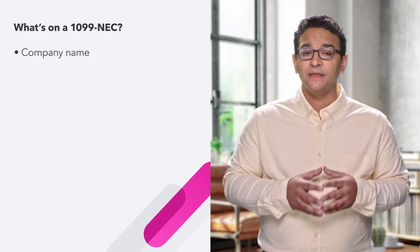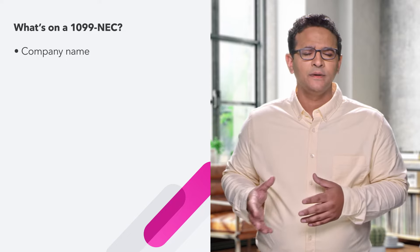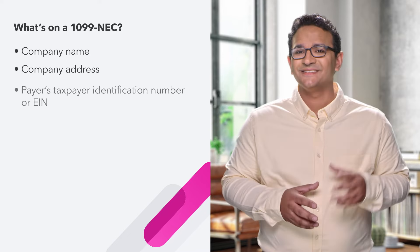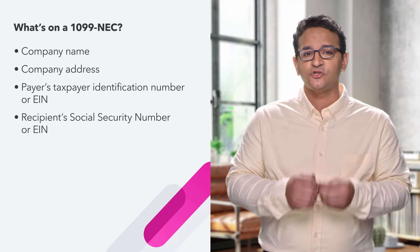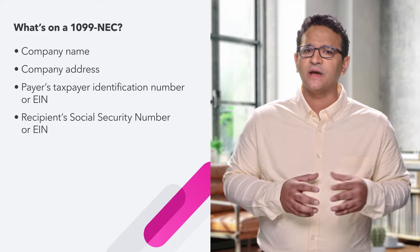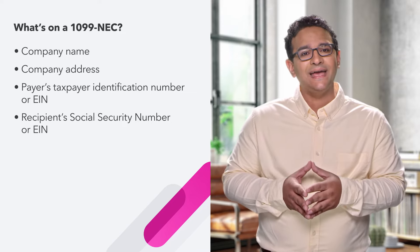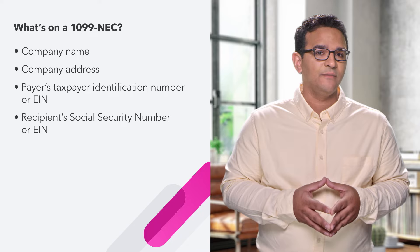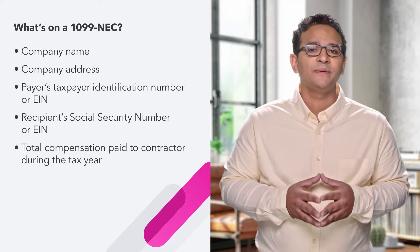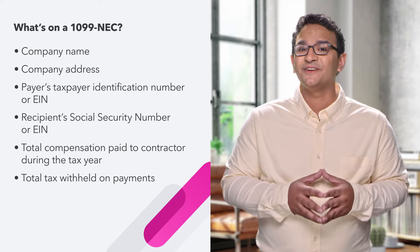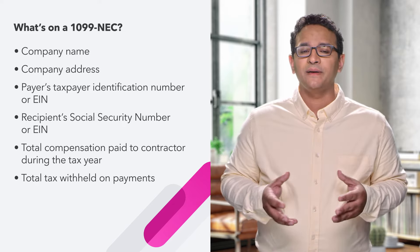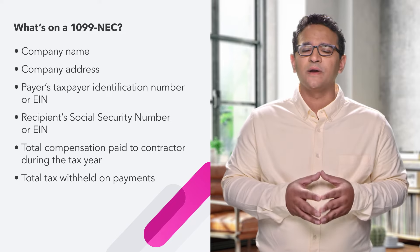So what's on the 1099-NEC? They contain six important pieces of information. First, you have the payer's company name, the payer's company address, and the payer's tax ID or EIN. Then we have the recipient's social security number if the contractor happens to be an individual, or an EIN if the contractor is a business. It also contains the total compensation paid to the contractor during the tax year. And also, if there's tax withheld on those payments, that will be reported as well, though that's very rarely used.